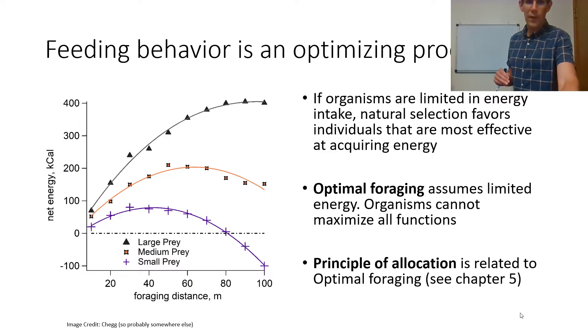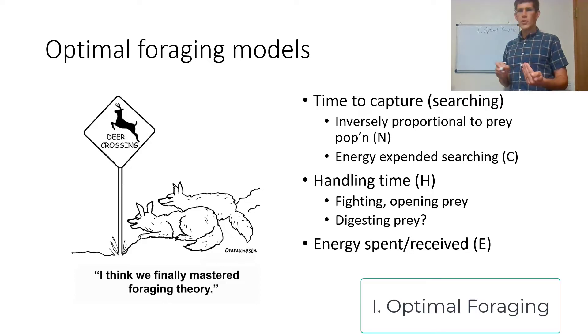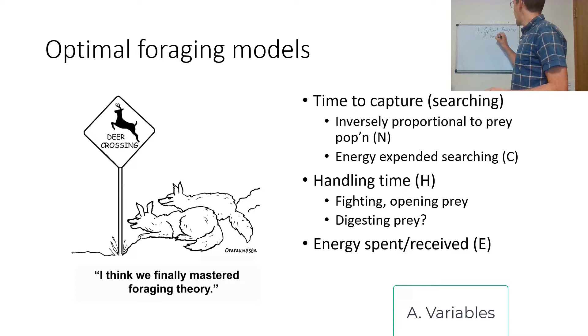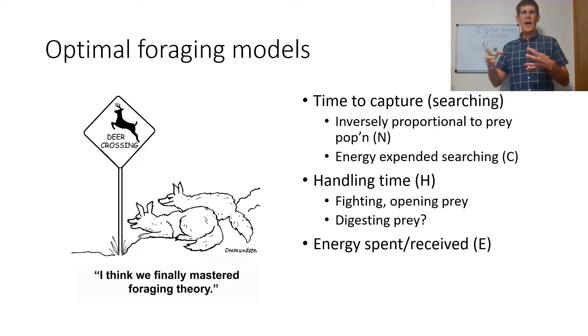We're going to look at this more exactly in optimal foraging models. The optimal foraging model looks at several distinct variables here, and these variables are each something that is easy to grasp and apply. We have the prey population, N, and we're going to see N used later on as the size of a population. We're going to see it at some points referring to predator-prey interactions, but that's later.